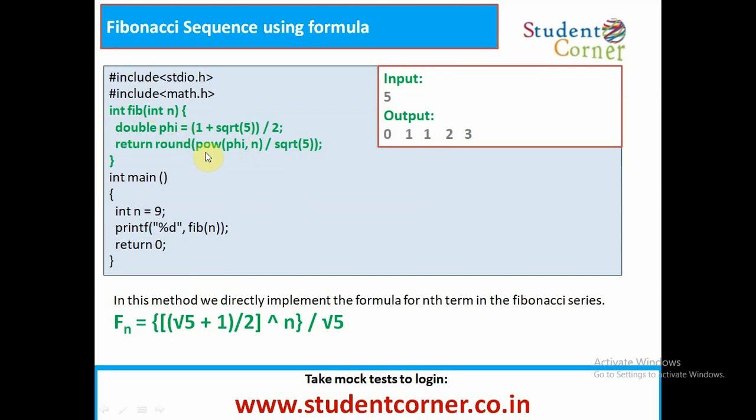Here, pow is the function available in math.h to find power of anything. Secondly, round is the function available in math to round to certain number. This is the way we are using it. When compared to all the logics, this is the efficient logic available in this Fibonacci series. Thank you.